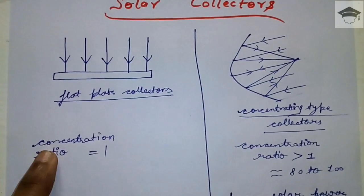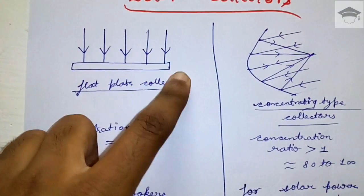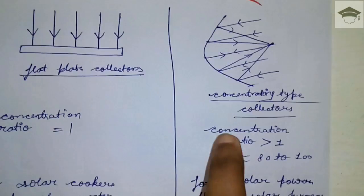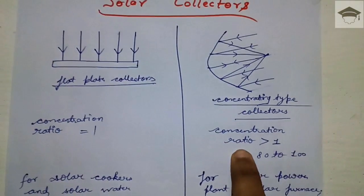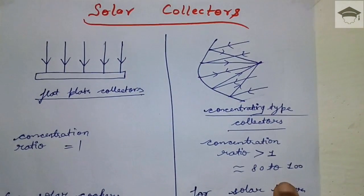For concentrating type collectors, the concentration ratio is much greater than one, nearly 80 to 100, because the concentration ratio is the ratio of aperture area to focus area.